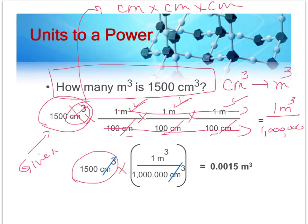So, when you do all that, you can finally cancel out the centimeter cubed. And your final answer is .0015 meter cubed. So, look at that, take your time, and hopefully start to understand that.